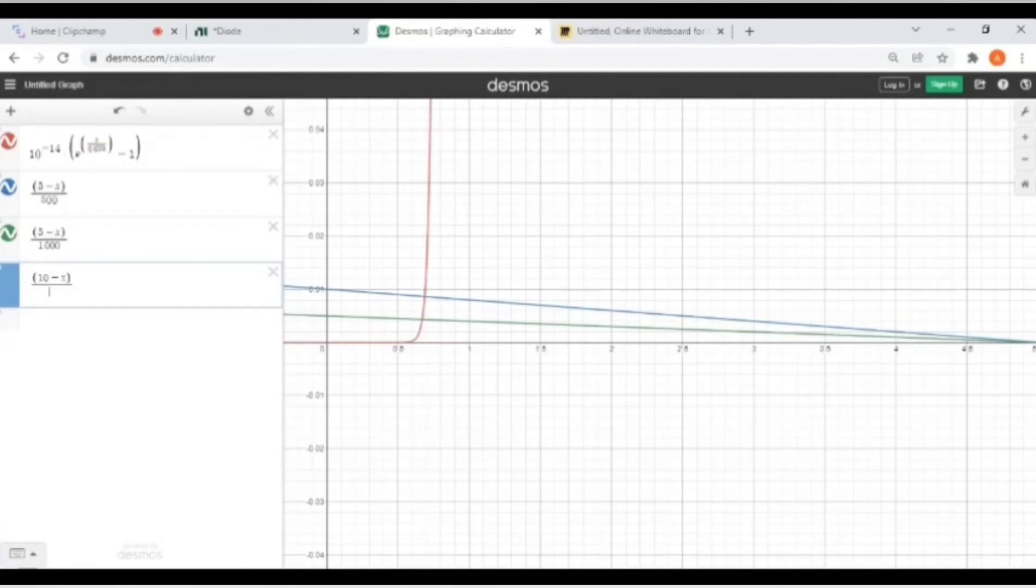10 minus X divided by 500. The purple line shows that equation with 10 volts. The voltage across the diode still remains the same, but the value of current increases. Thanks for watching. Goodbye for now.